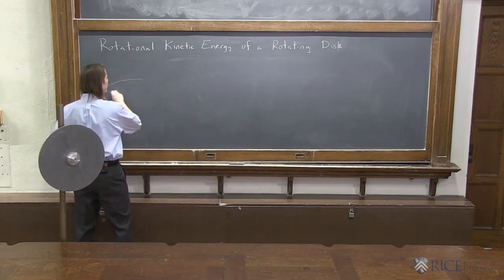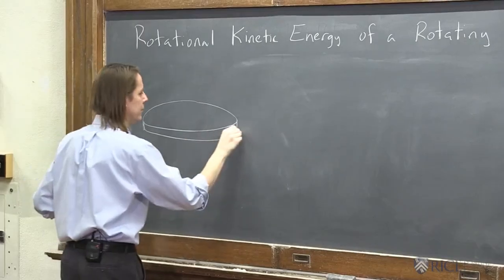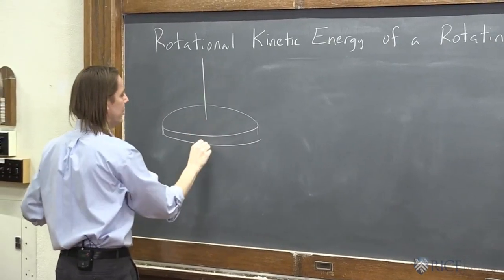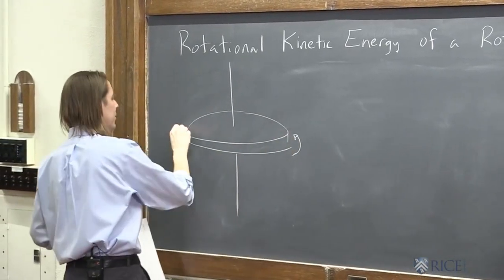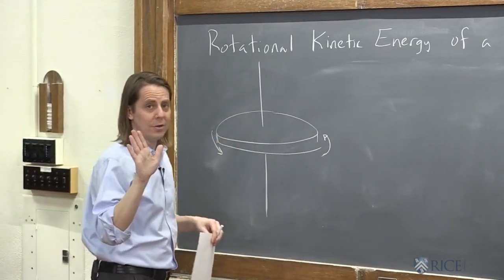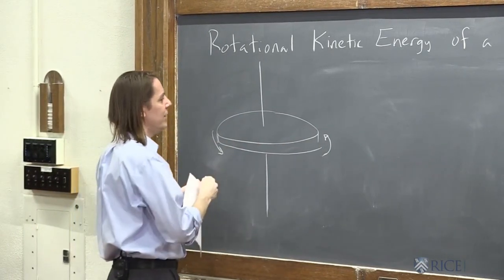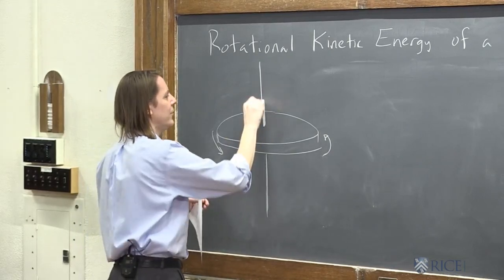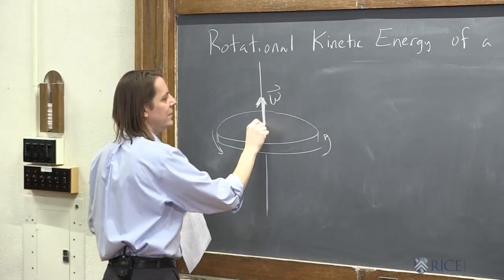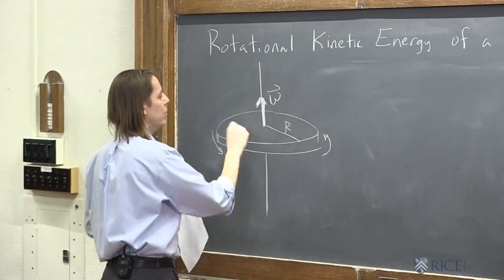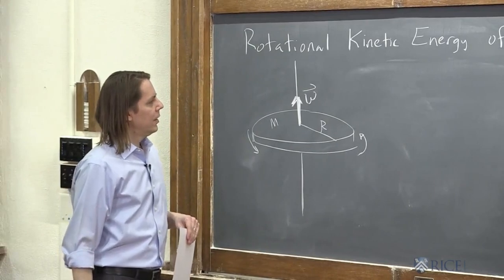So here's our disk, like this. And it's rotating around that axis, like that. And let's say it's going kind of like that's that way, and this is this way. So I can use the right-hand rule to figure out which way the angular velocity is. It's up. So there's the angular velocity vector. And we can give the disk a radius r if we want, and a mass m.